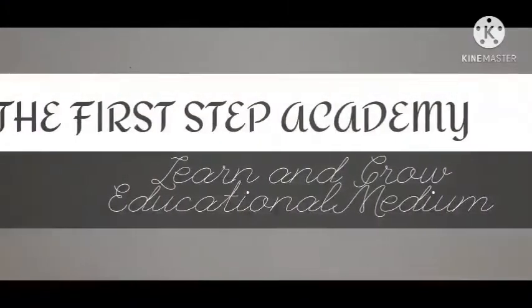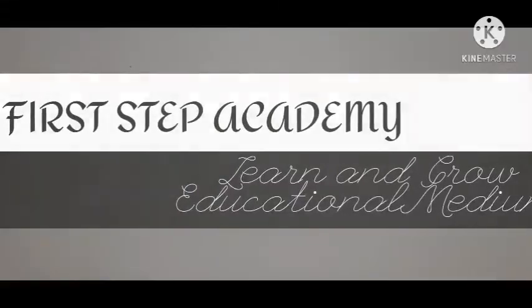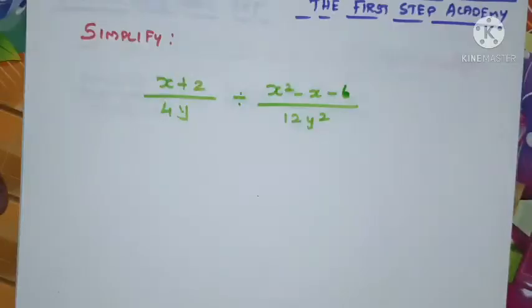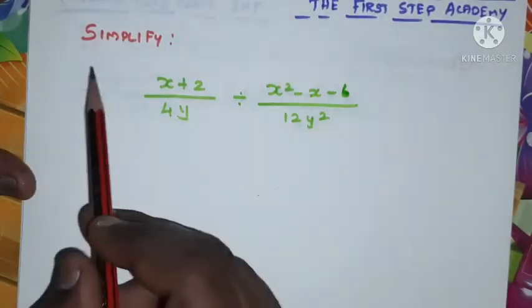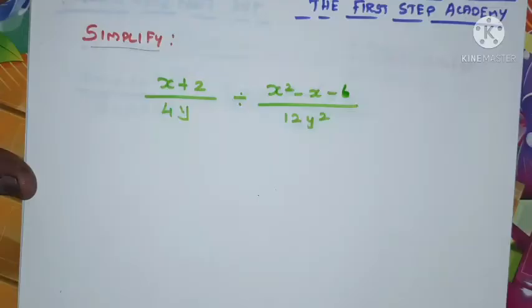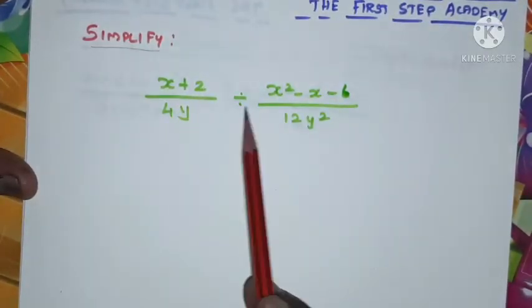Hi, hello, welcome to The First Step Academy, learn and grow educational medium. In this video we are going to find a solution for the following problem. The given problem is simplifying (x+2)/(4y) divided by (x²-x-6)/(12y²).